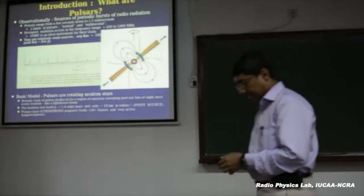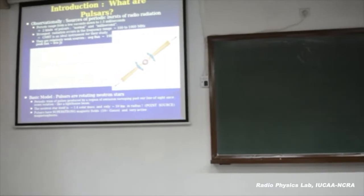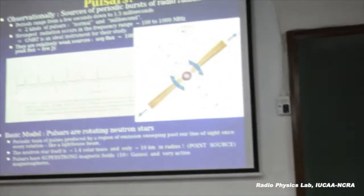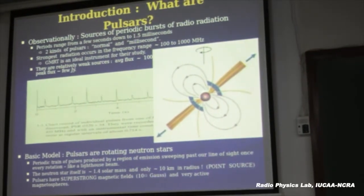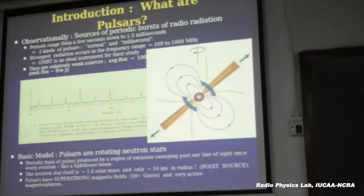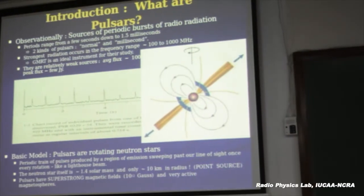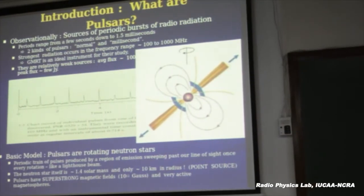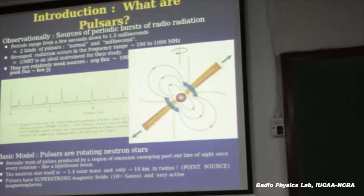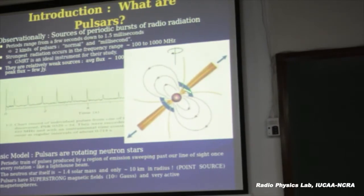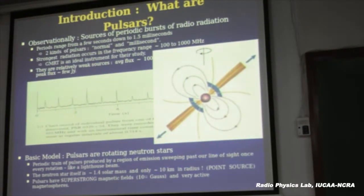Our current understanding is that the emission comes somewhere up in the magnetosphere, of the order of 1,000 kilometers above the neutron star's surface. The jets are energetic charged particles streaming out. It is not synchrotron — we still do not know exactly what the mechanism is. One of the things is that whatever the mechanism, it has to be coherent.